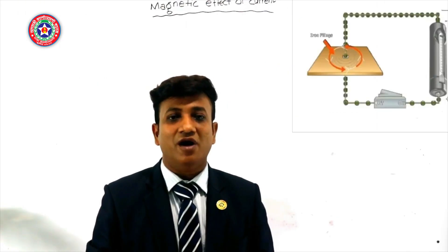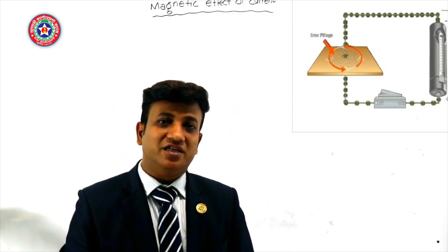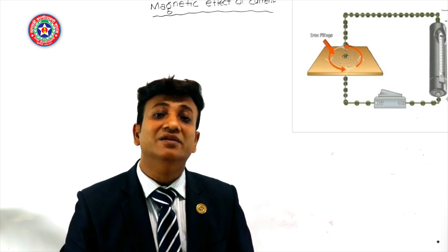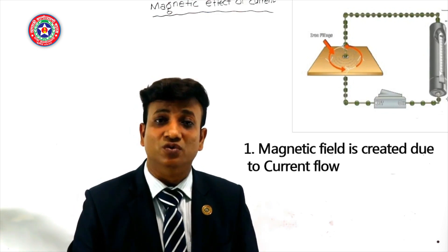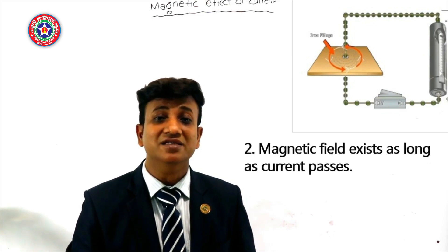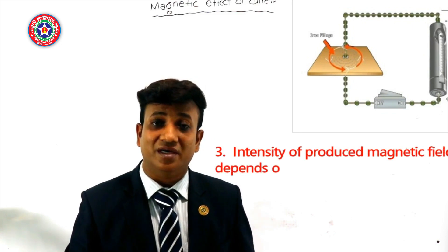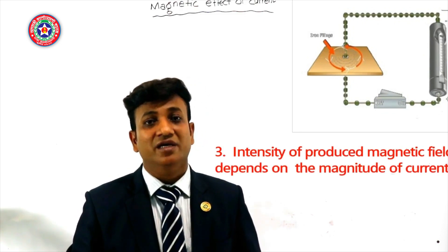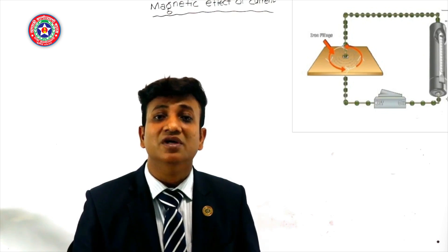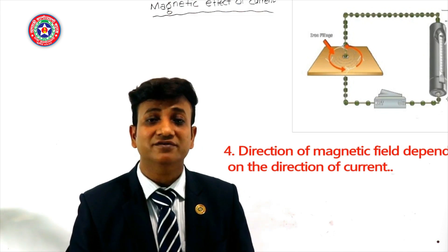From this experiment, Oersted made four conclusions about the magnetic effect of current. Number one: a magnetic field is created due to current flow. Number two: the magnetic field exists as long as current passes. Number three: the intensity of the produced magnetic field depends on the magnitude of current. Number four: the direction of the magnetic field depends on the direction of current.